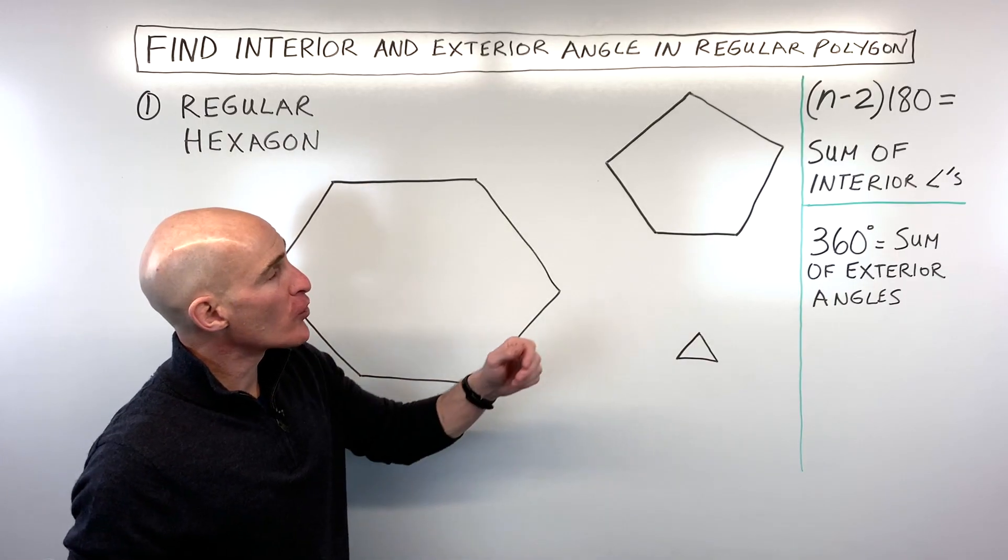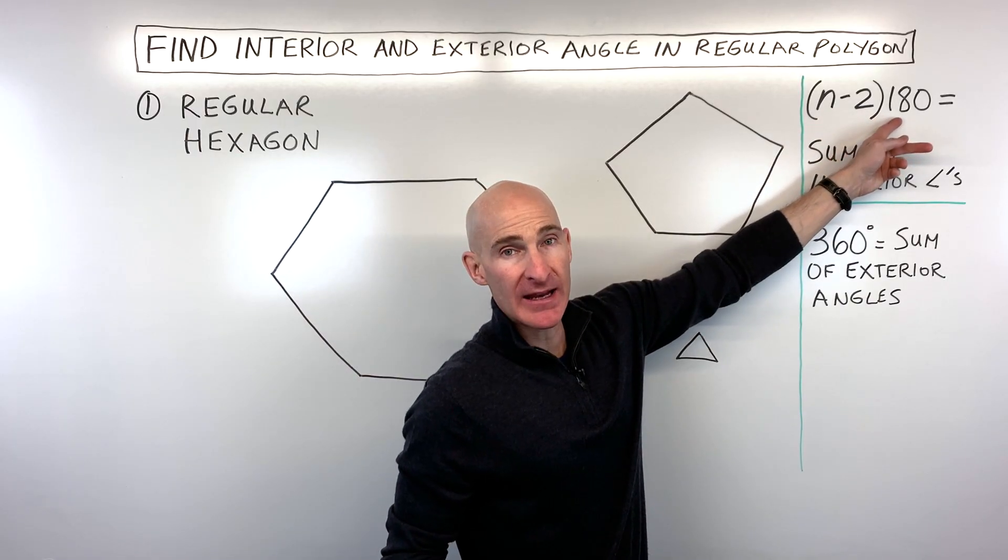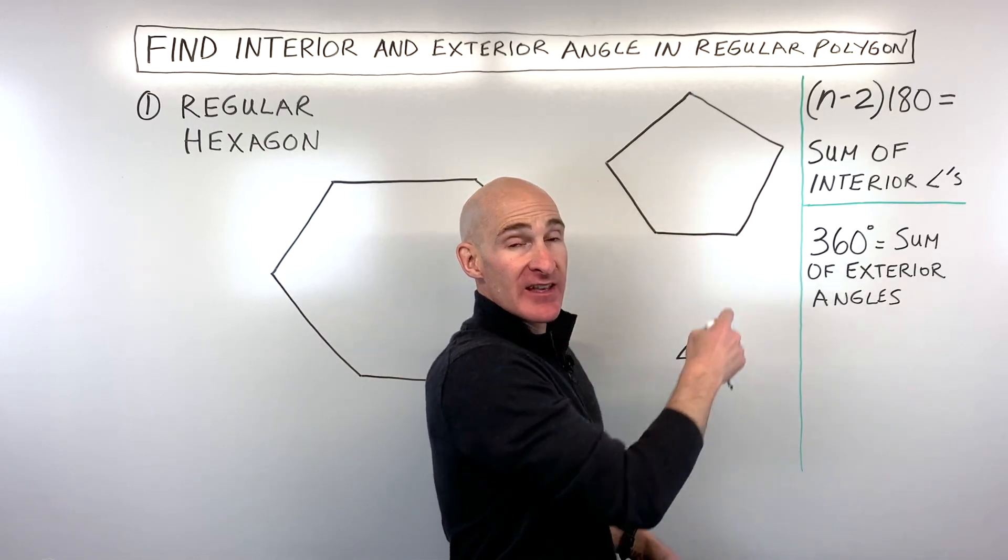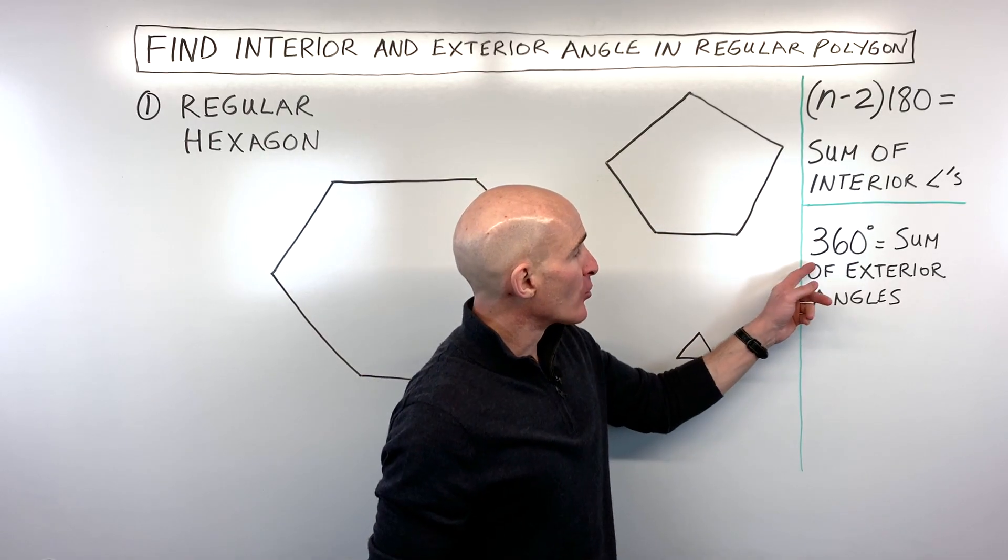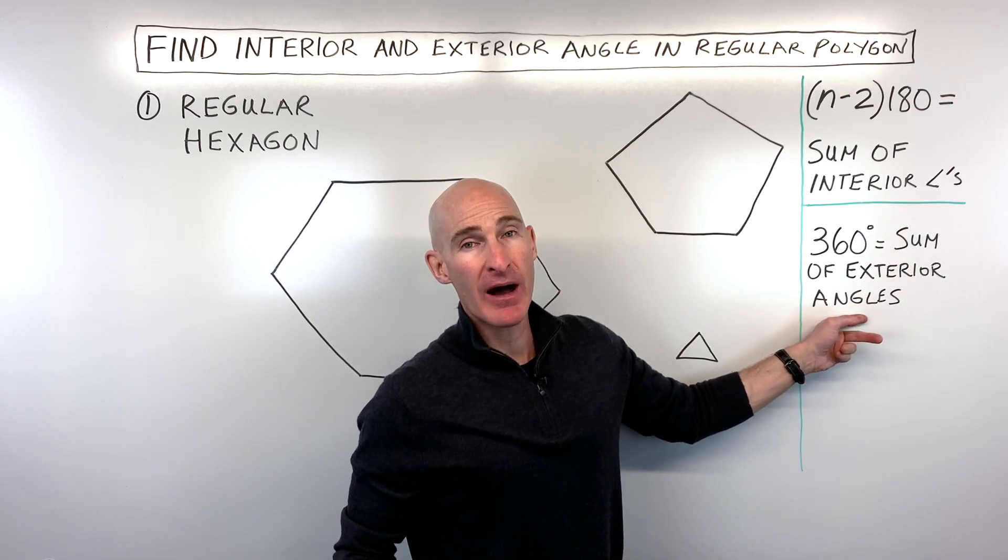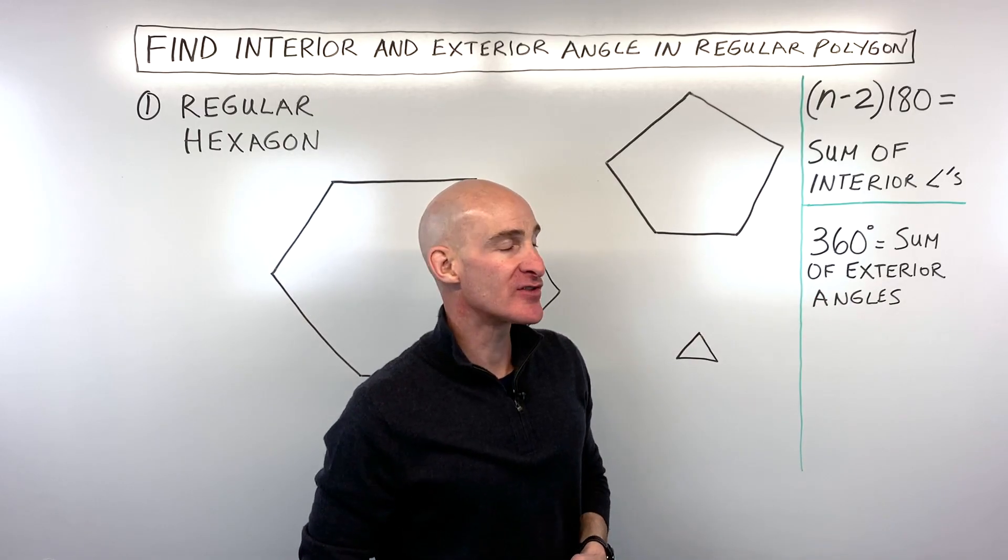So we're going to use two formulas in this lesson. We're going to use n-2 times 180, which is equal to the sum of the interior angles—so all these angles on the inside added up together. And then we're also going to make use of the fact that the sum of all the exterior angles in a polygon always add up to 360, no matter how many sides there are, no matter how many angles there are.